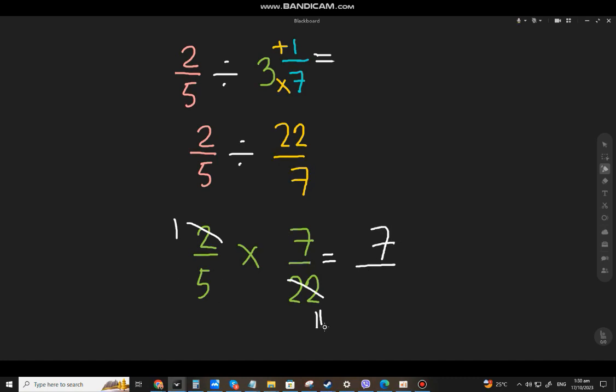5 times 11, that will be 55. And since this is a proper fraction, you cannot change it to a mixed number. And this is already the final answer. For the question 2⁄5 divided by 3 and 1⁄7, you will get 7 over 55.